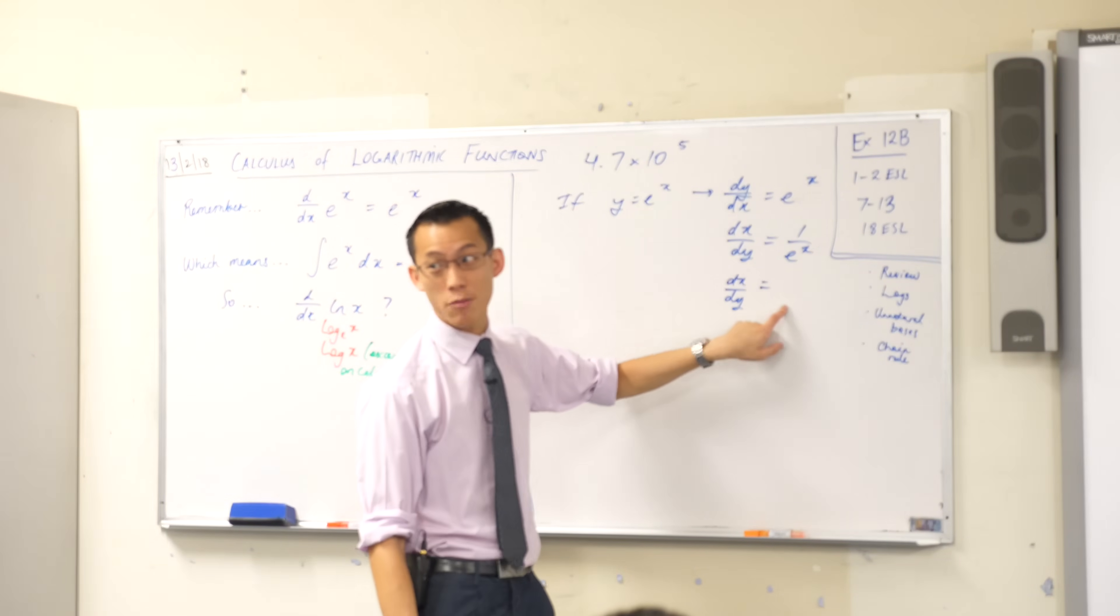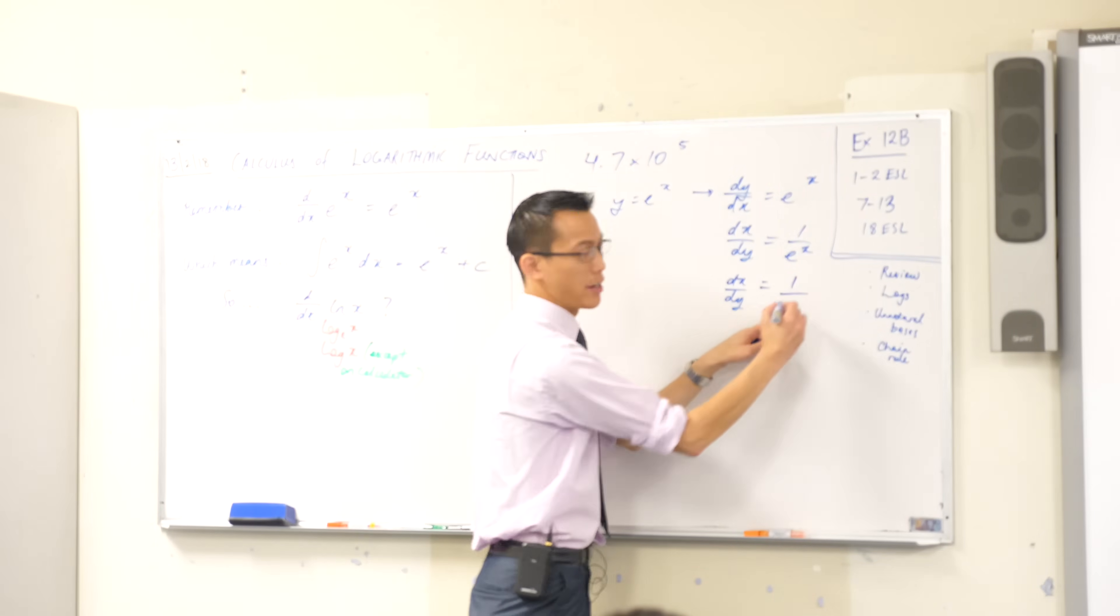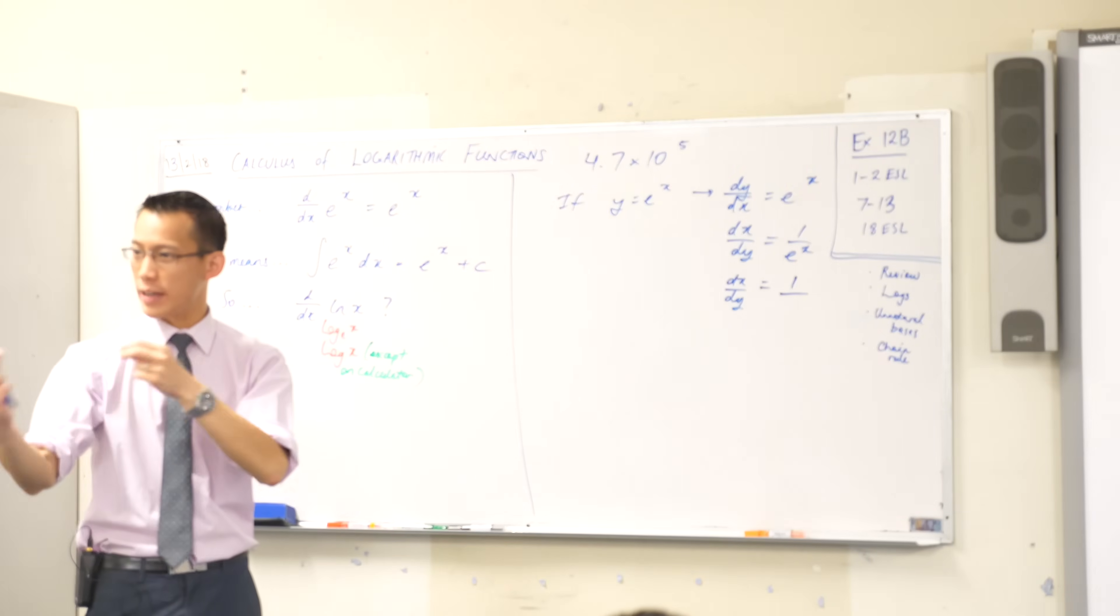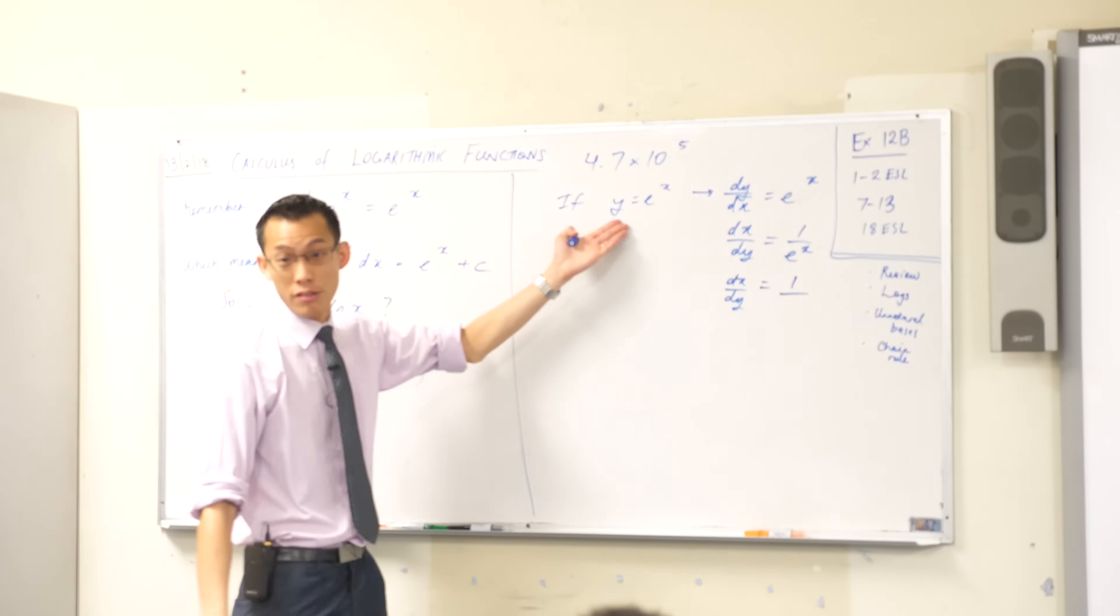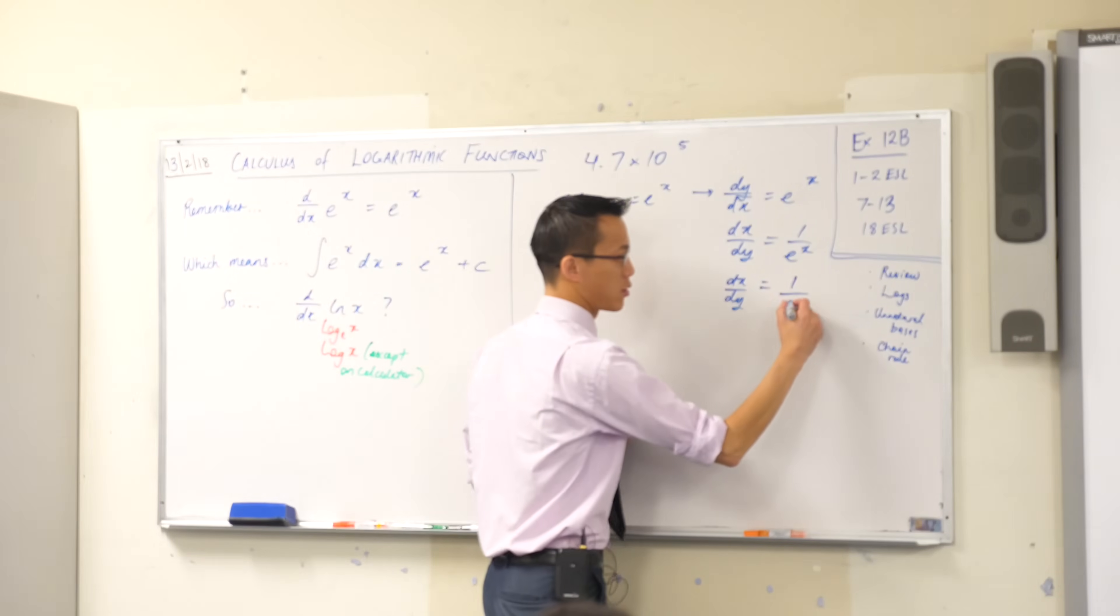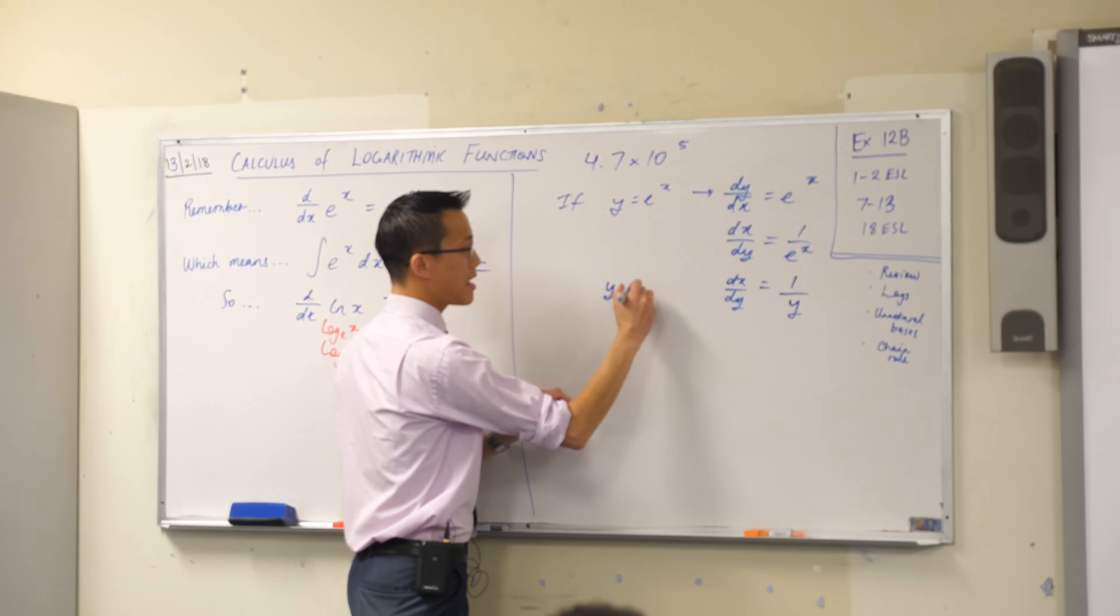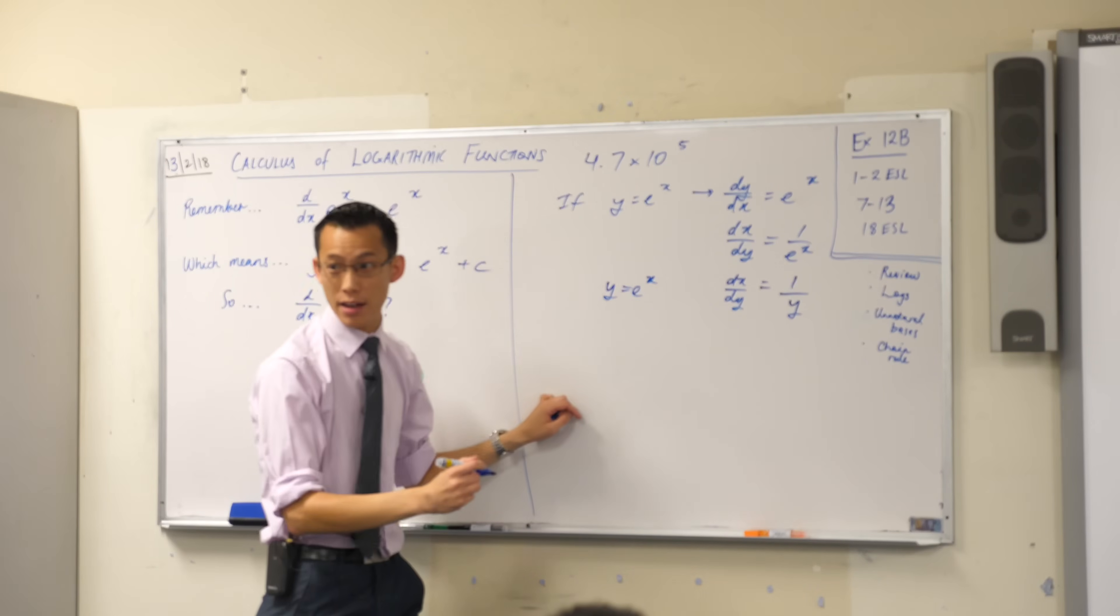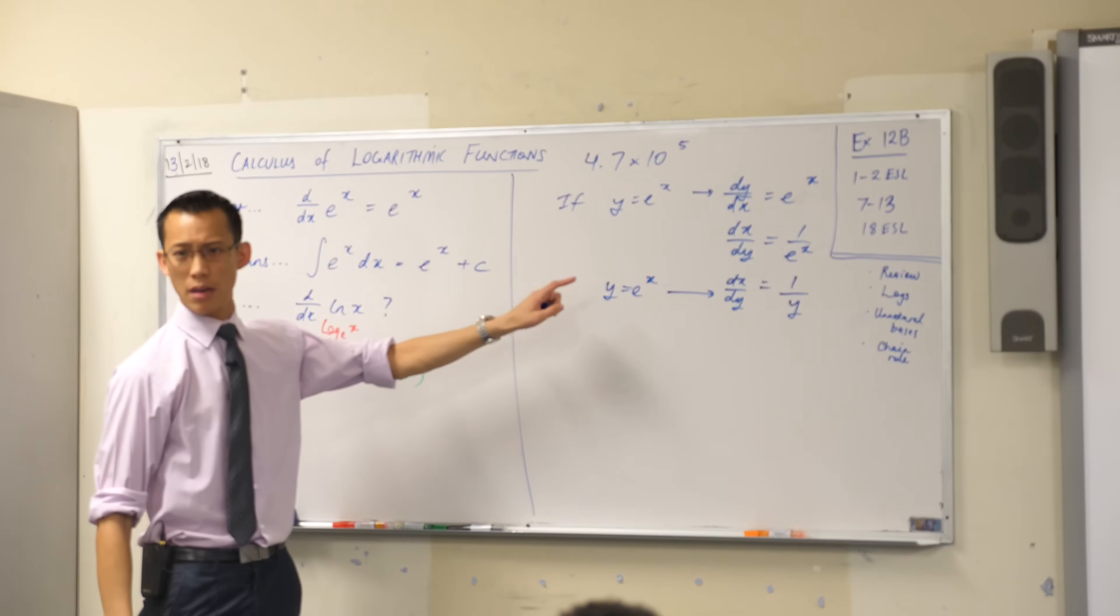Thankfully, I can write the right-hand side in terms of y really easily. Think back to when you were doing volumes and you had to change back and forth between x and y. Have a look at the board. There's not that much written here to help you. What else could you say? What is e to the x in this context? It's just y. Like that's literally the first thing I wrote down. So it's 1 over y. Is that okay? So if y equals e to the x, that's what I started with, I get to this.